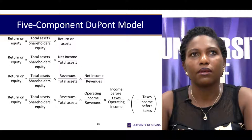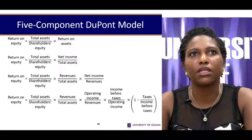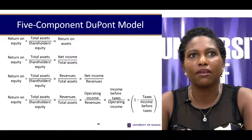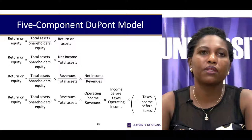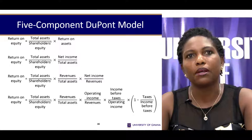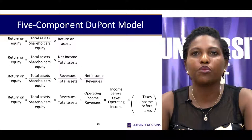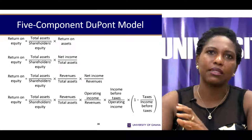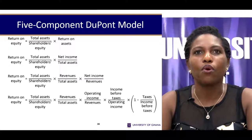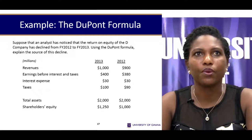The DuPont breakdown starts with return on equity as leverage multiplied by return on assets, which is further broken into components. At the five-point level, we consider the equity multiplier, total asset turnover, expense management, and the operating tax environment — together showing how well the firm is performing and pinpointing where specific issues lie.